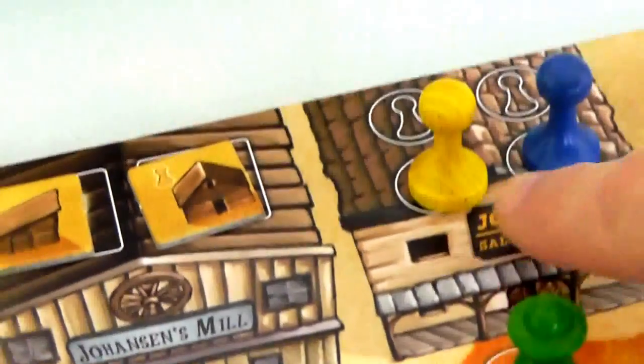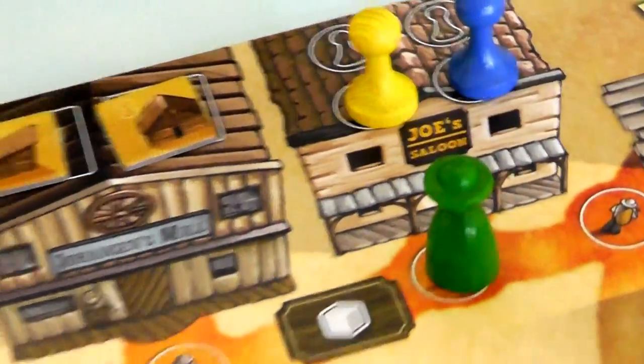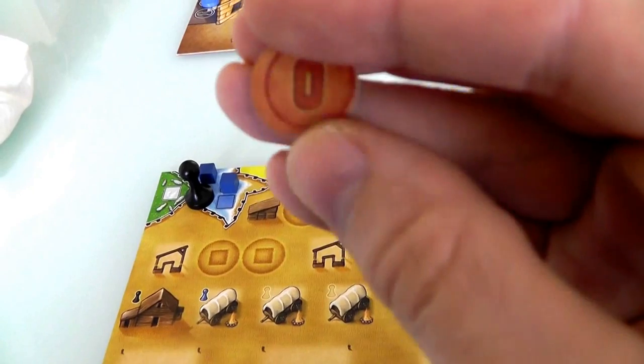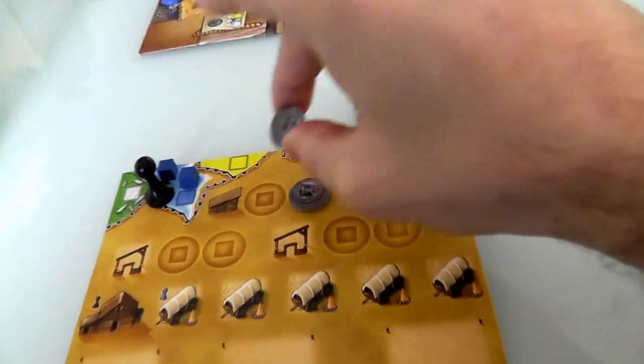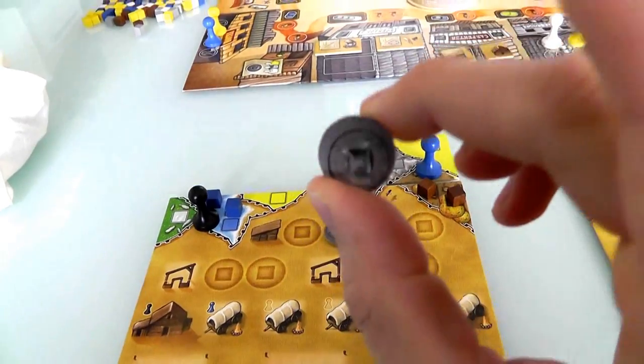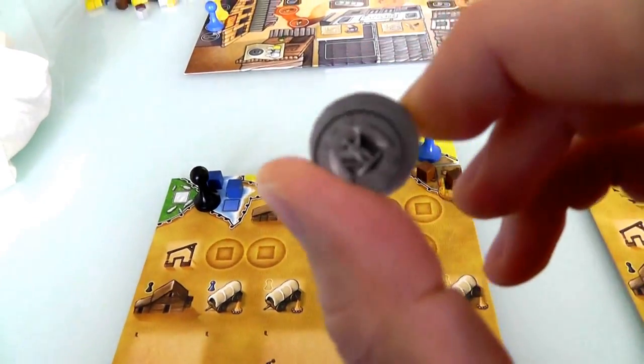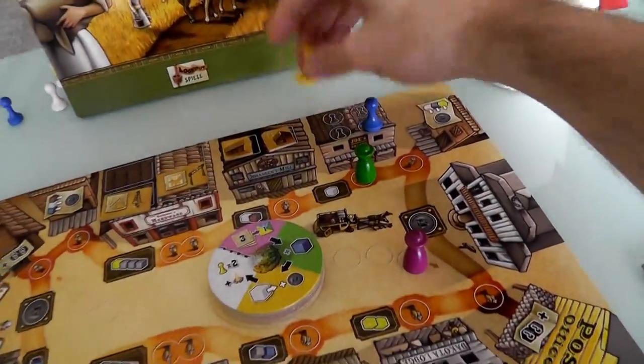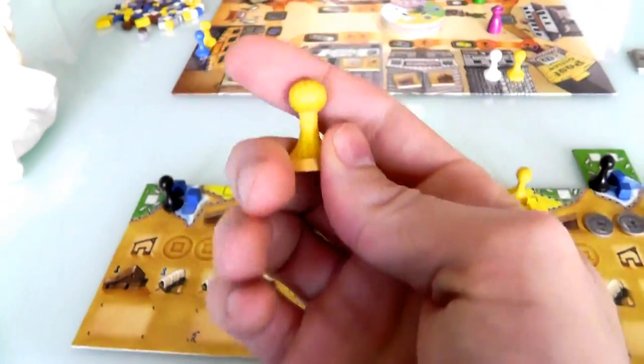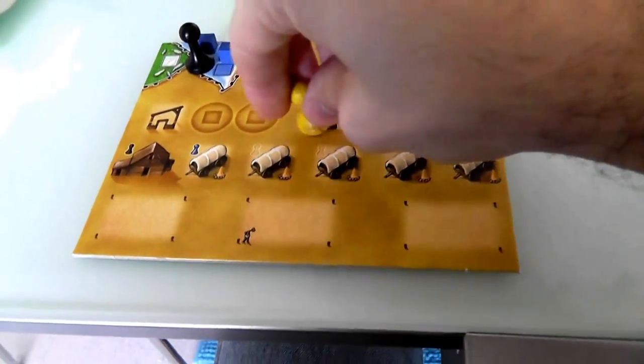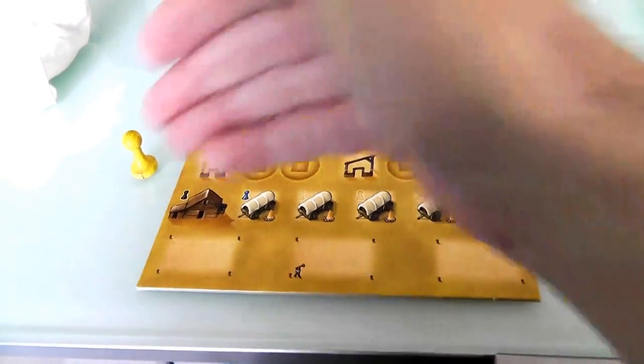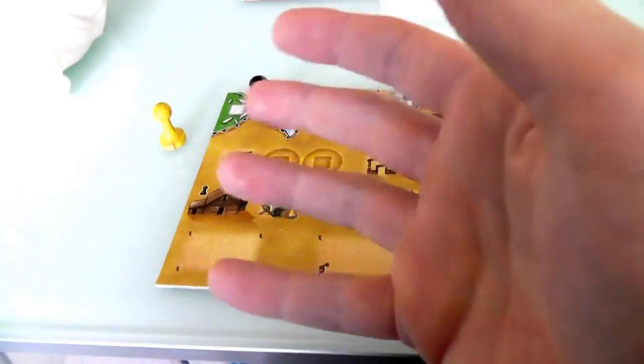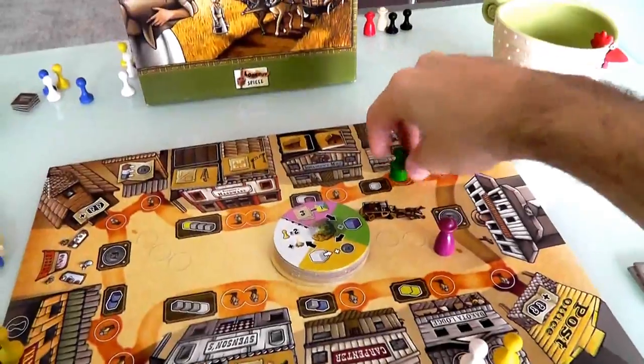I'm going to come over here to Joe's Saloon. Yeehaw! If I pay one dairy, I could hire one of these cowpokes, and I'll have additional workforce. I don't have any dairy, as you may recall. But my coins can be used as a wild card for any cube. Since I don't have any dairy, I'm going to give up one of my coins and say I'm using this as a dairy cube. Goes back in the cup, and I'm hiring a guy. I will hire this yellow guy. I now have a third worker. This guy won't work for me this year, so I put him off to the side to represent next year he will come and join my labor force.